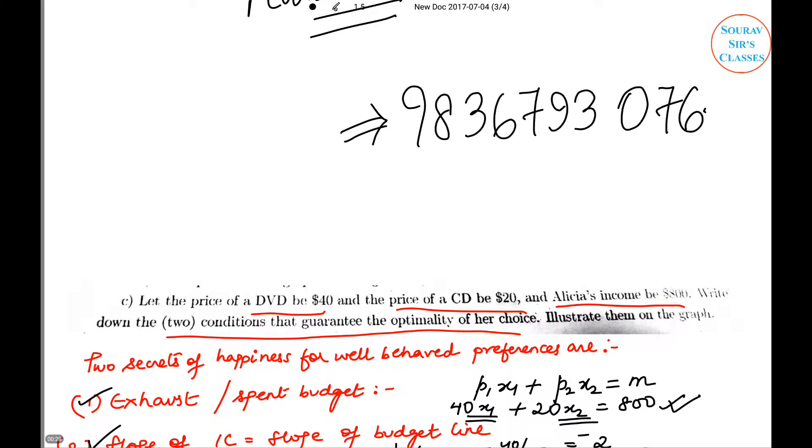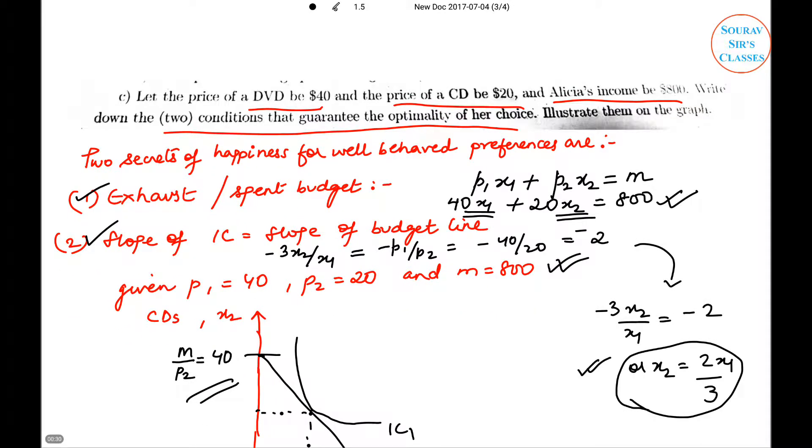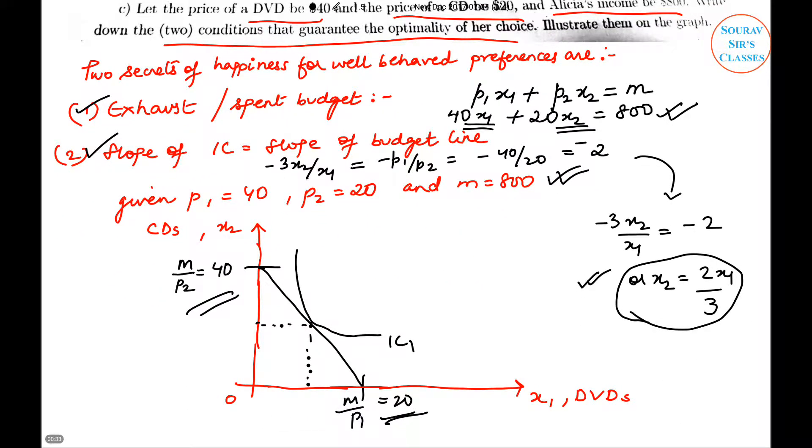Now this was the last question that has been solved by us, provided in the previous tutorial. We have got this IC along with this particular horizontal intercept and the vertical intercept, and this is the relation. Now we move on to the last part of this particular sum.